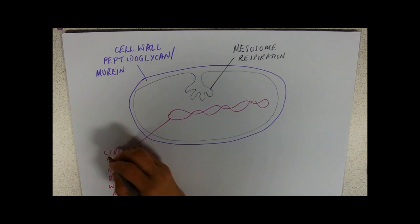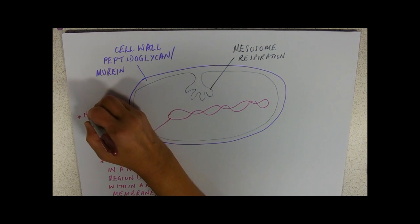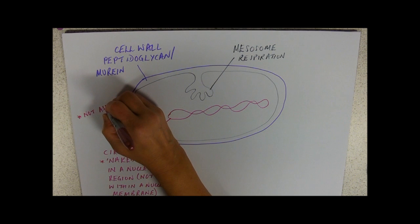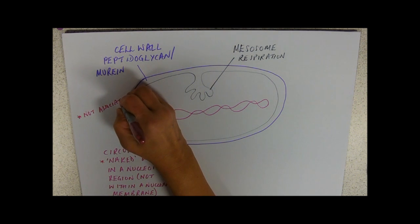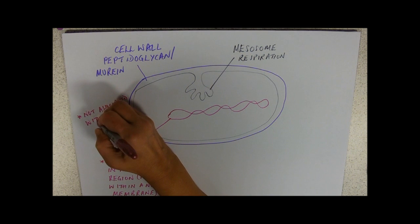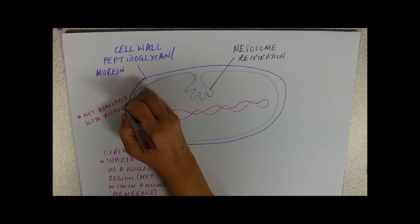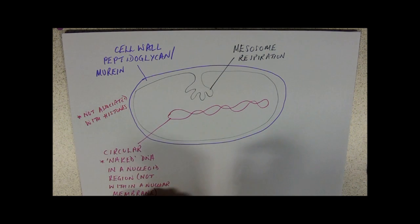Naked, I think, probably deserves a bit of explanation. That means it's not associated with histones. When we did chromatin, we said that it was the DNA and protein, and the proteins are called histones. So instead of the DNA being strung out like the string between beads of protein, naked DNA is not like that.